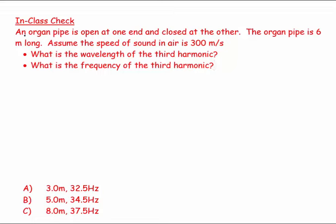Welcome. This question says an organ pipe is open at one end and closed at the other. The organ pipe is six meters long. Assume the speed of sound in air is 300 meters per second. Then what is the wavelength at the third harmonic and what is the frequency of the third harmonic?